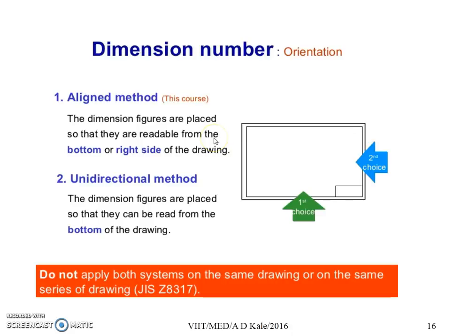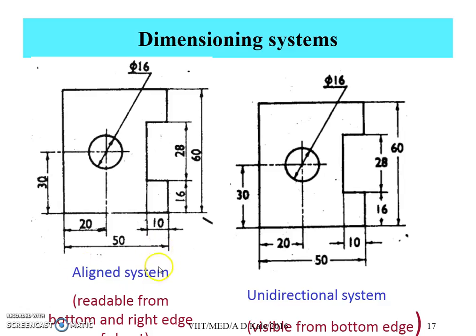There are two methods used to give dimensions to a drawing according to orientation. One method is called the aligned method. Throughout this course, we are going to use the aligned method, where the dimension figures are placed so that they are readable from the bottom or right side of the drawing. In the aligned system, the dimension lines are full and the number is kept at the center and at the top of the line.